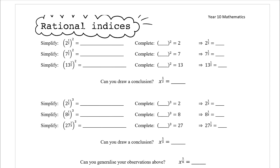We want to look at two to the power of a half, and then that to the power of two. We know that when we have a power after a power we multiply them together — our index laws tell us that. So we know this is two to the power of a half times two, which is two to the power of one, so two. Similarly, seven to the power of a half squared is seven to the power of one, so seven. And thirteen to the power of a half squared is thirteen to the power of one, which is thirteen.